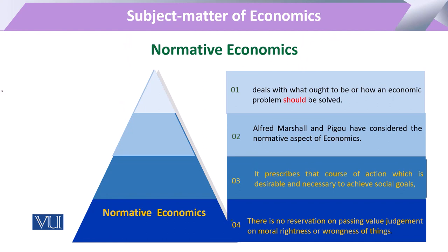On the contrary, when we deal with normative economics, we say it deals with what ought to be, or what should be, or what can be. It is not related to what actually happened; rather it gives what we can do and what the available viable solutions for a problem are.